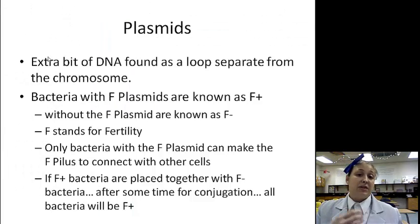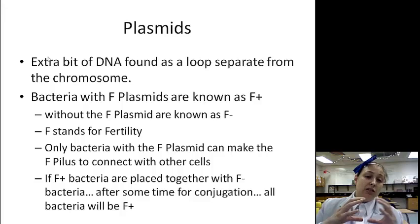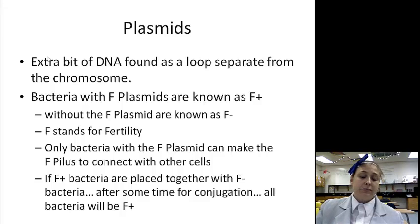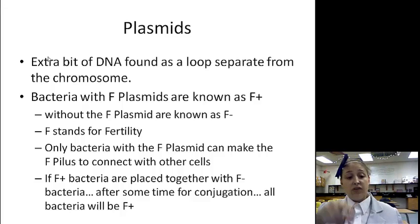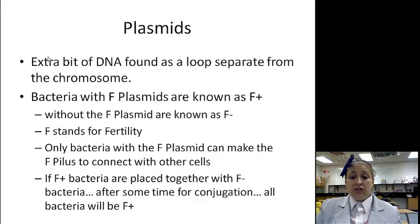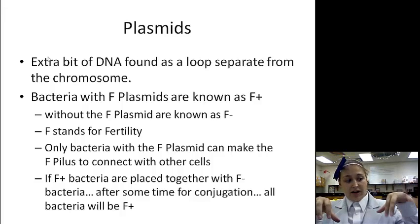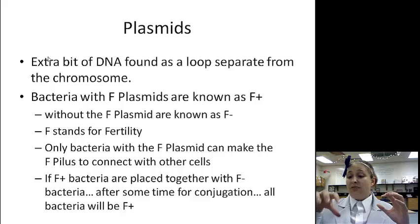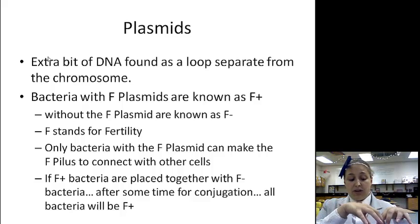What is a plasmid? A plasmid is an extra bit of DNA found in a bacterial cell. It is most of the time a loop, and it is separate from the chromosome. Bacteria with F plasmids are known as F+; without the F plasmid, they're F-. F stands for fertility. Only bacteria with the F plasmid can make the F pili to connect to other cells. If you mix a bunch of F+ and F- bacteria together and give them time, conjugation will occur, and the F+ cells will give a copy of their plasmid to all the F- cells, so they all become F+.